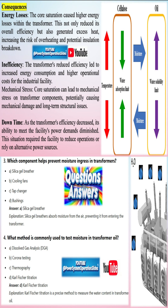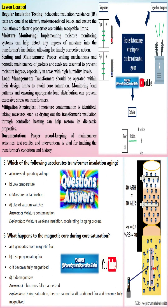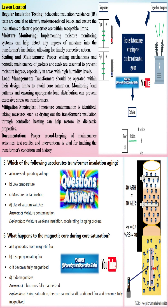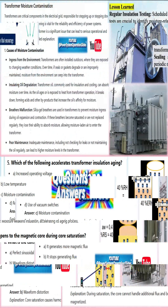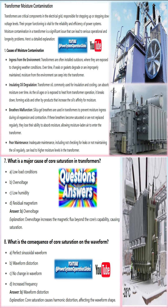Most of the water in a transformer resides in the cellulose. During operation, influenced by varying loads and temperatures, water migrates between the oil and cellulose. Elevated operating temperatures can temporarily double the water content in the oil. Even minimal water presence in the solid insulation accelerates aging, reduces the transformer's permissible hotspot temperature, and heightens the risk of bubble formation, which can lead to dielectric failure.